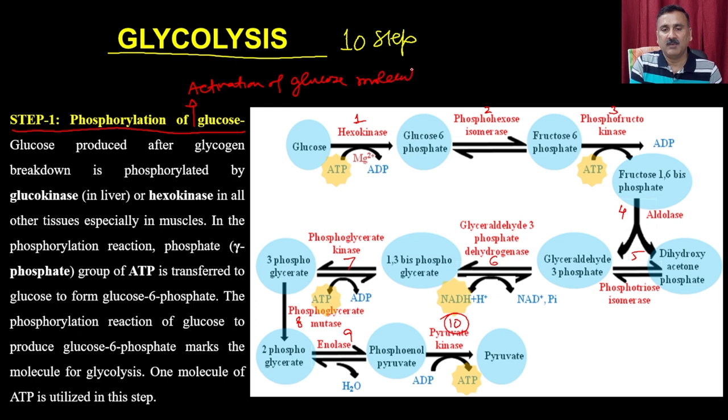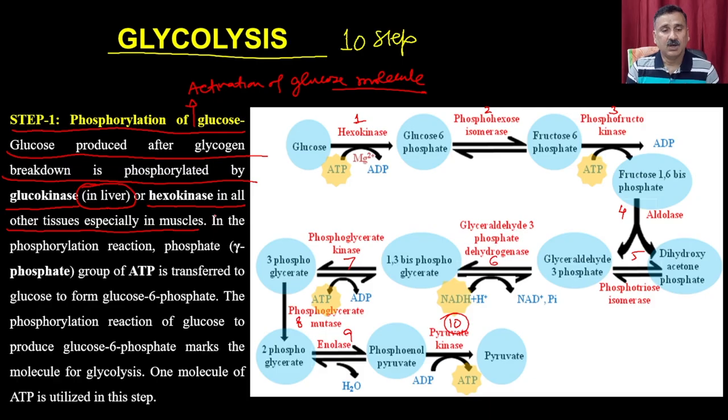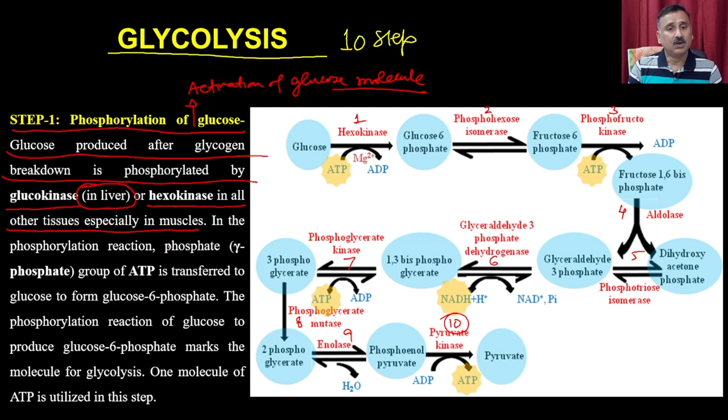You have to invest some energy to destabilize glucose — once you add a phosphate group to the glucose molecule, it contains very high energy, making the system unstable. The glucose produced after glycogen breakdown is phosphorylated by the enzyme glucokinase. Glucokinase is only present in the liver, whereas hexokinase is present in all other tissues, especially muscles. In most organs such as brain, spleen, and muscles, hexokinase is the major enzyme catalyzing reaction number 1; but in the liver, it is glucokinase.